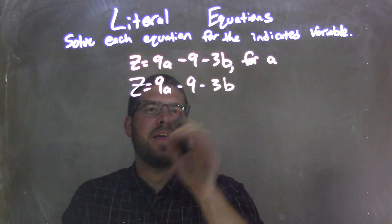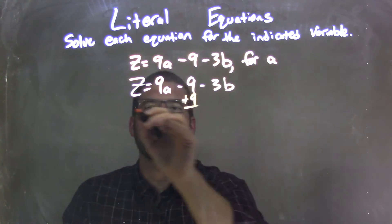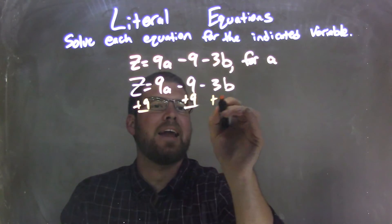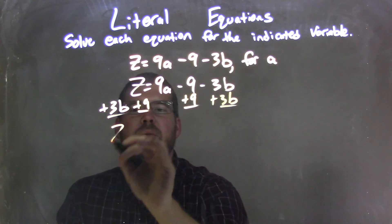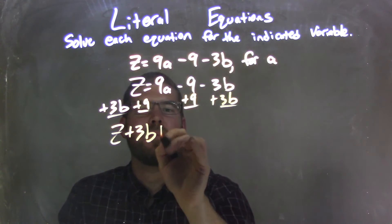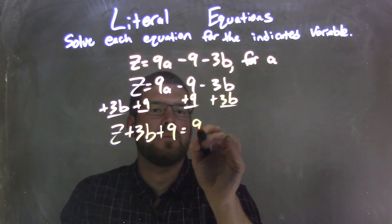I'm going to bring everything over except for the a. So I'm going to add a 9 to both sides and I'm going to add a 3b to both sides. So we're left with z plus 3b plus 9 equals 9a.